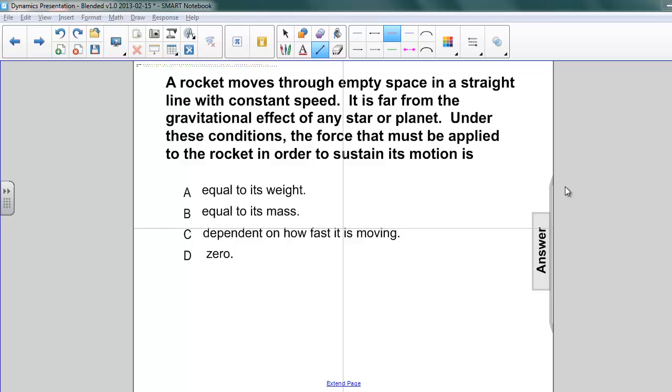Under these conditions, the force that must be applied to the rocket in order to sustain its motion is A, equal to its weight, B, equal to its mass, C, dependent on how fast it's moving, or D, zero.